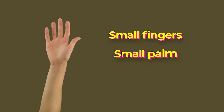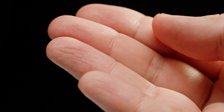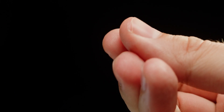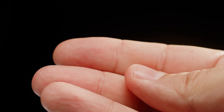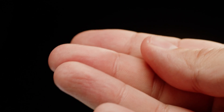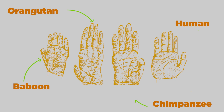Our hand has relatively small fingers, a smaller palm, and a significantly robust thumb. The most noteworthy aspect of our hands is the comfortable opposition of the thumb to each finger on the same hand. This is thought to be a result of evolutionary processes striving to achieve optimal function.